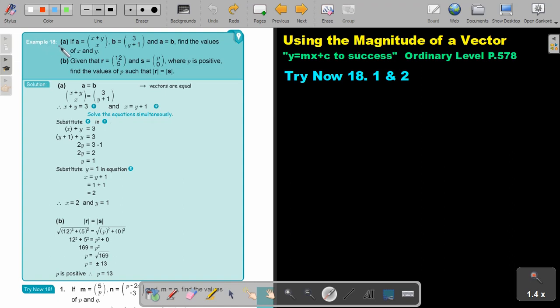Example 18. If A, this is the vector, B, this is the vector, and A equals B, that means the two vectors will be equal, find the values of X and Y.